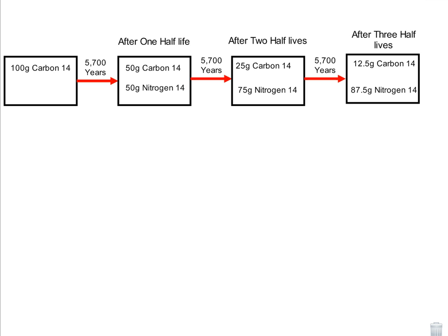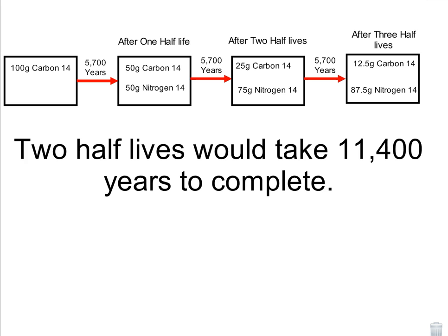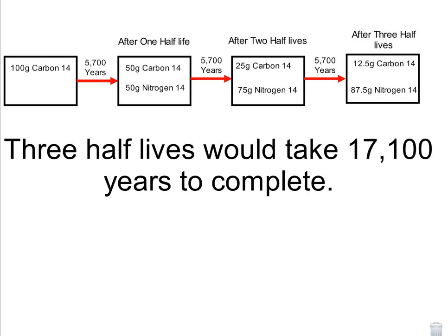After three half-lives, we'd have 12.5 grams of carbon-14 and 87.5 grams of nitrogen-14. So that would be after three half-lives. One half-life would take 5,700 years to complete, two half-lives would take 11,400 years to complete, and three half-lives would take 17,100 years to complete.